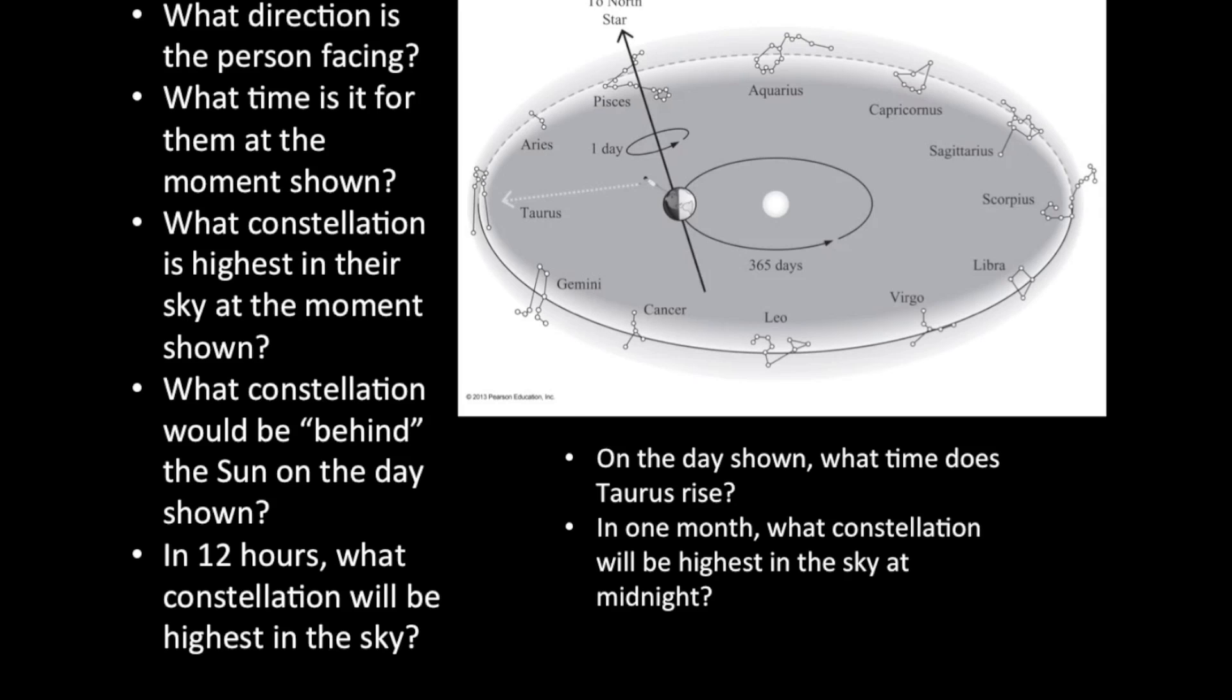What about in one month? In one month, what constellation will be highest in the sky at midnight? Well, the Earth takes an entire year to go all the way around its orbit, and at each step in its orbit, if you're on the Earth, you'll be facing out at a different place in space when you're facing away from the Sun.